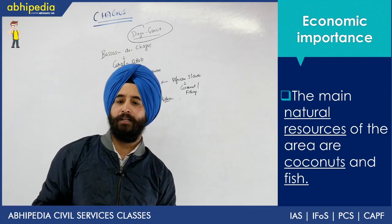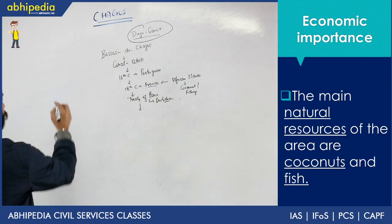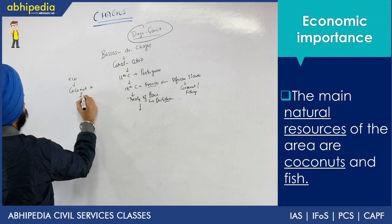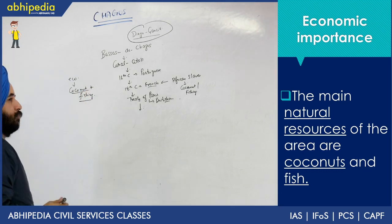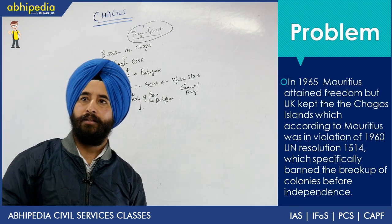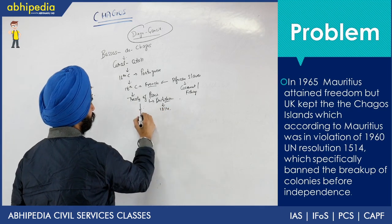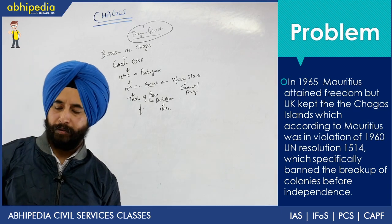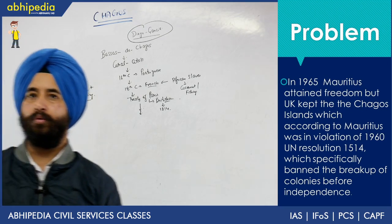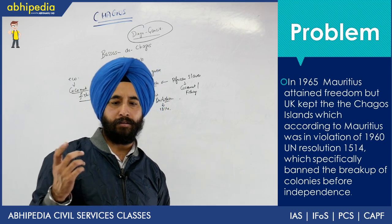The economic importance of the island was basically the cultivation of coconut and fishing. This was the main source of income. As we have seen, it was under the control of the British since 1814. At that time, colonization was prevalent — major Western countries were trying to make developing and underdeveloped countries their colonies.